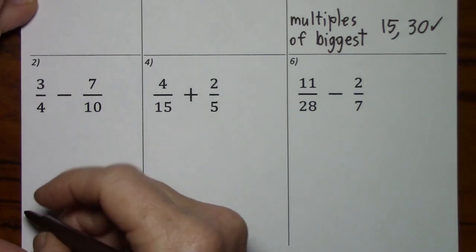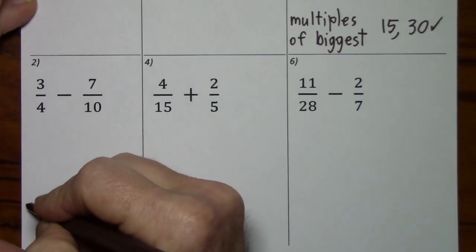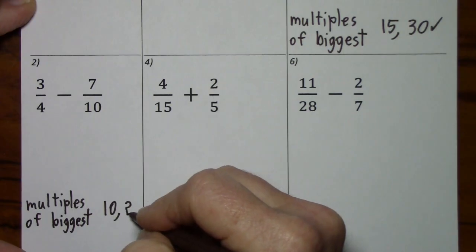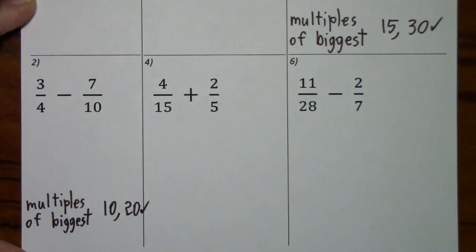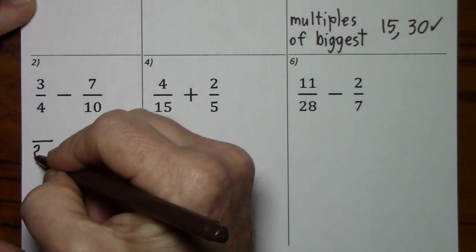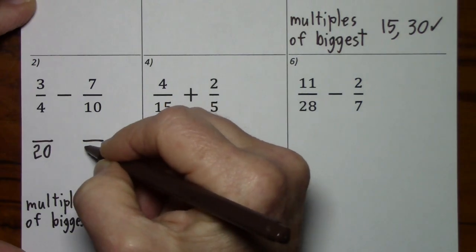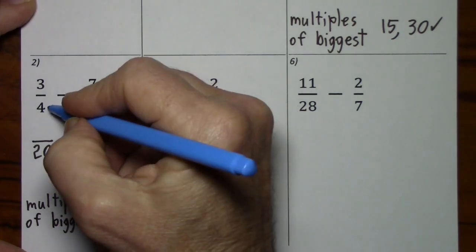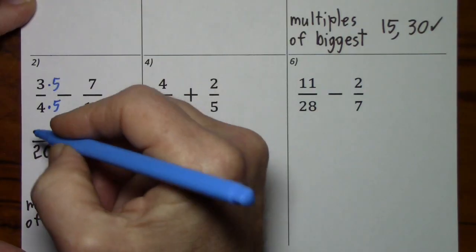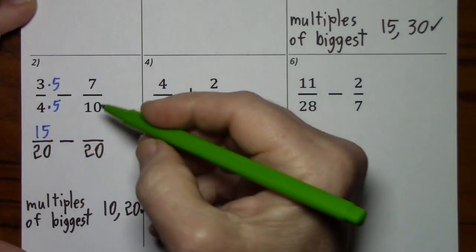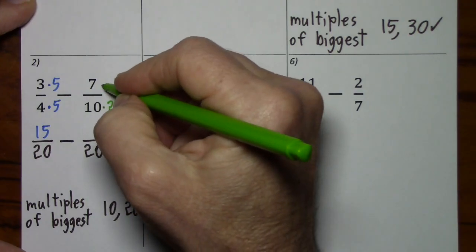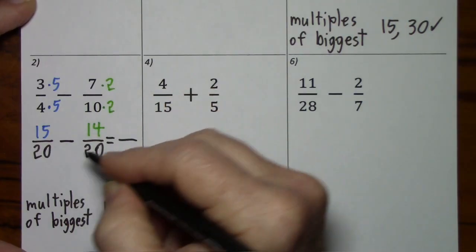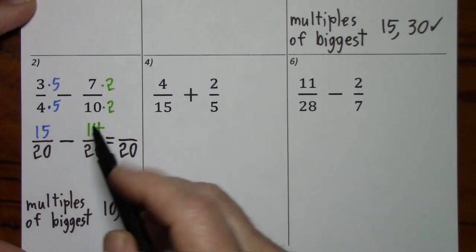With 4 and 10, we'll look at multiples of the biggest. So that's 10, then 20, and 4 goes into 20. 20 is our least common denominator. To get from 4 to 20, multiply by 5 — do the same to the numerator. To get from 10 to 20, multiply by 2. We know we're going to keep the denominator, so we simply subtract the numerators.